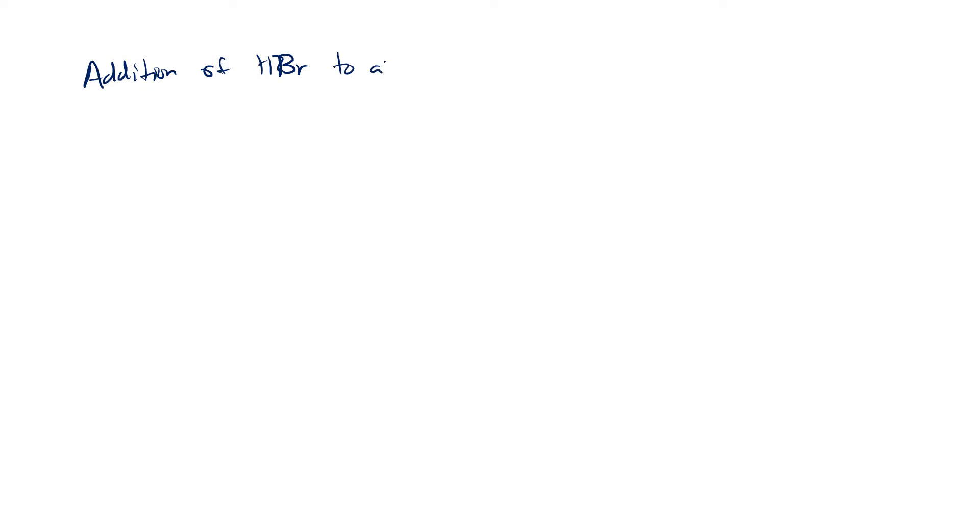Let's look at more bromination reactions. We're going to find another way to use radicals to add bromine to organic molecules. The reaction we're going to talk about today is the addition of HBr to an alkene as a radical.